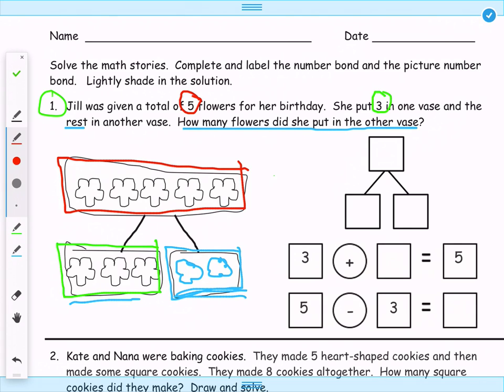So we're going to come over here and fill out our number bond. So we started with 5 flowers, and 3 of them went in this vase right here, and then 2 of them went in this vase right here. And so we figured out that 3 flowers plus 2 more equals 5, and 5 minus 3 flowers equals 2.